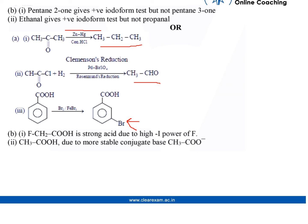Moving to part (b): FCH2COOH is a stronger acid due to the high -I power of F. CH3COOH is weaker, though it has a more stable conjugate base CH3COO-.